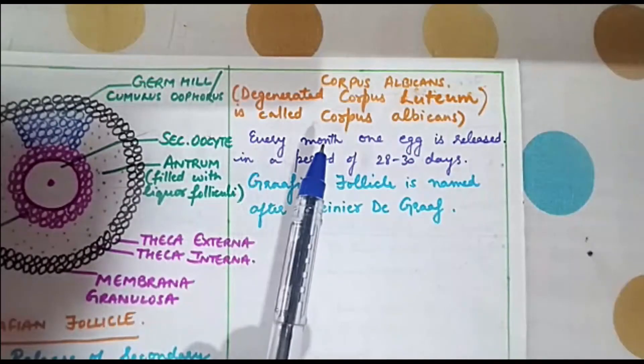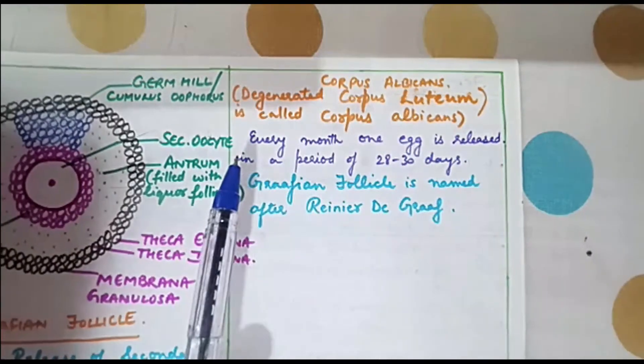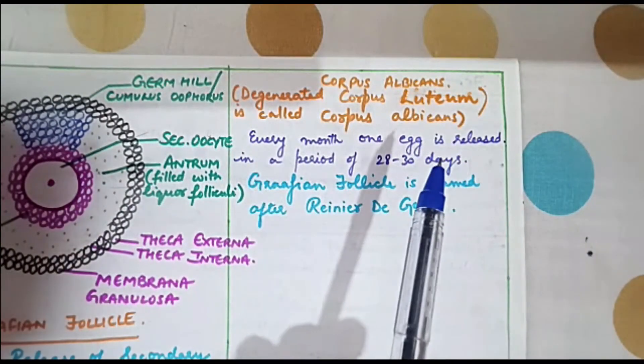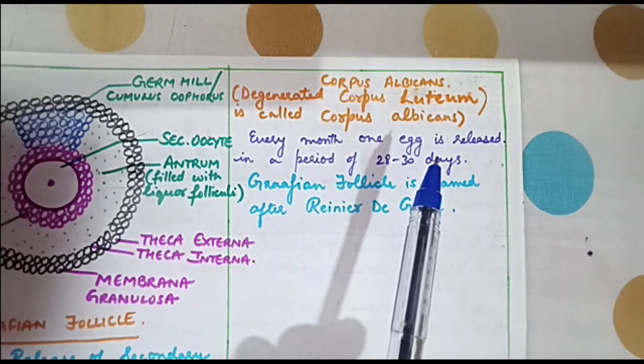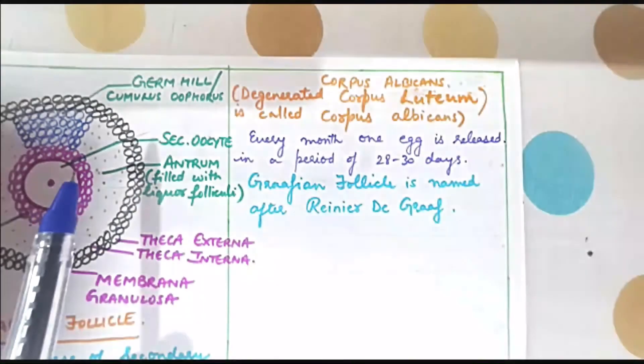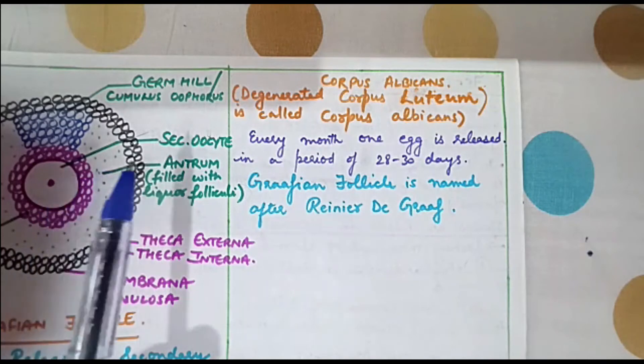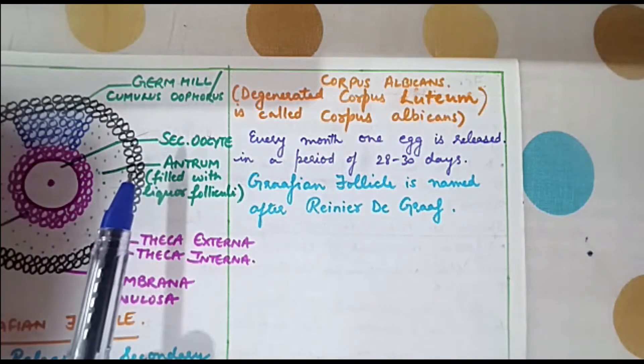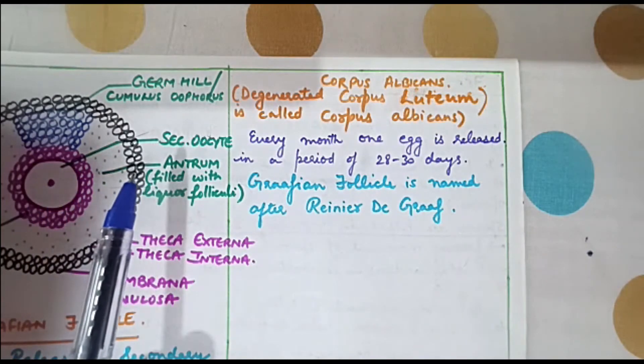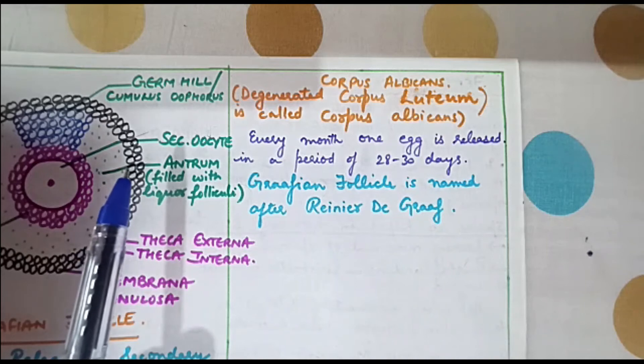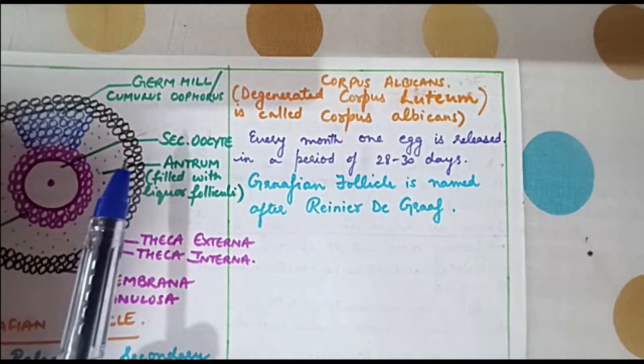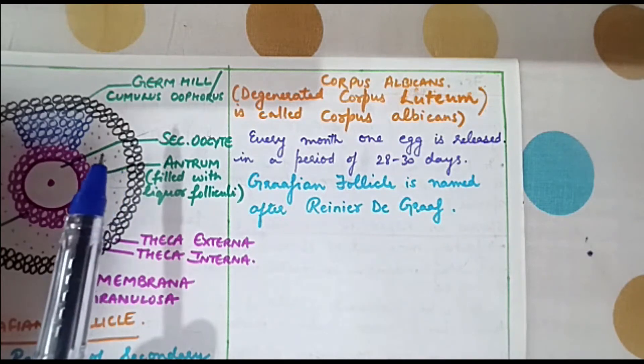Every month one egg is released in a period of 28 to 30 days. Every month this secondary oocyte comes out of this Graafian follicle and is released. If it does not receive the sperm it will degenerate, but if it receives the sperm it will undergo further development.